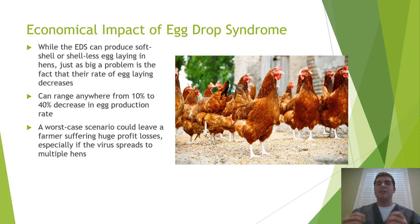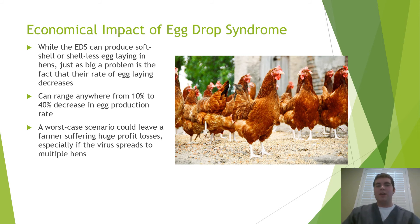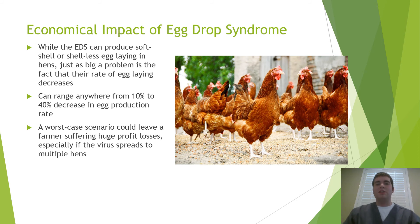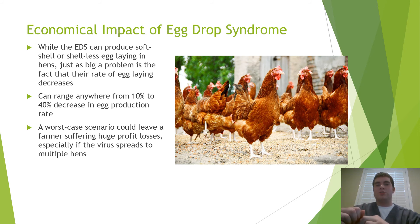While a farmer is able to sell some of the bad, deformed eggs, they're selling them at a lower price. If they're getting those eggs from the same bird, they're going to be selling fewer of them, meaning that a worst-case scenario is that the virus spreads to multiple hens and you're selling cheaper eggs and fewer of them. By the time the virus finally runs its course through the entire flock, the poultry farmer could be crippled financially beyond recovery. This is why it's incredibly important to practice the proper prevention methods.